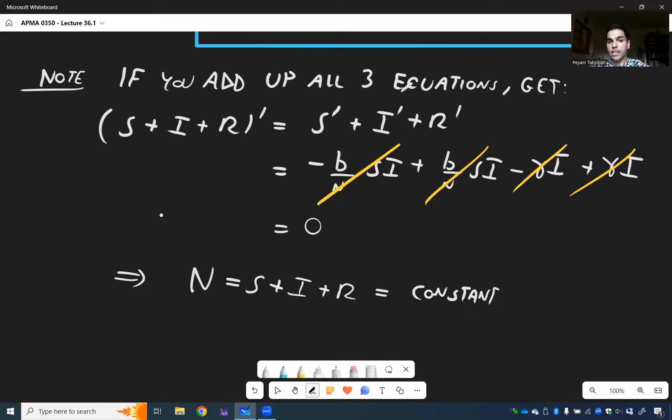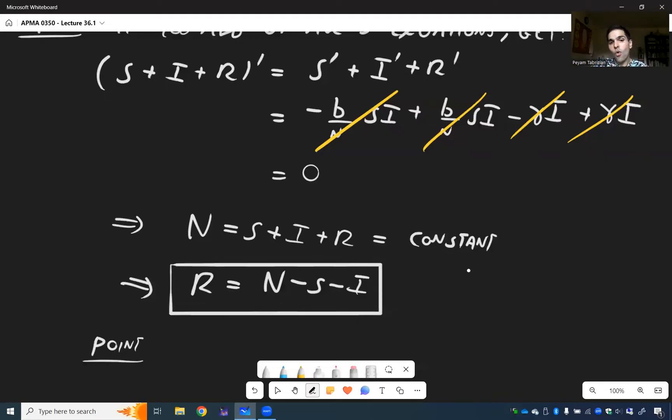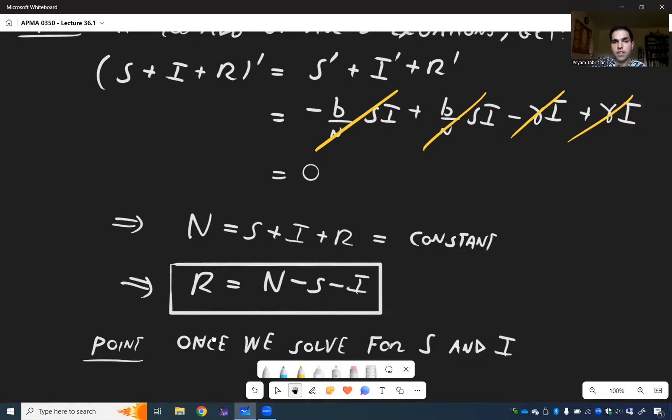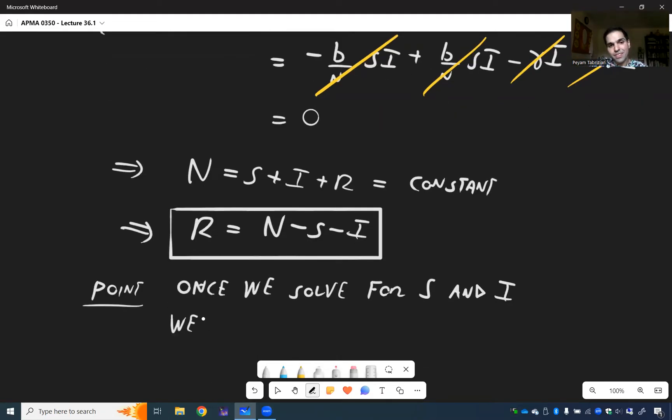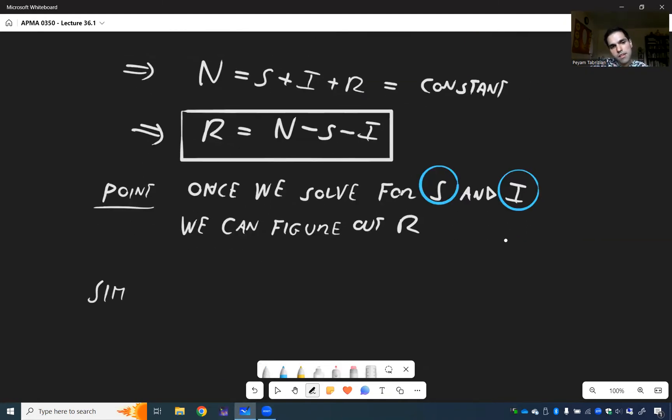But remember the sum, we call this the total population. N equals S plus I plus R is constant. And therefore, we can actually solve for R in terms of S and I. So N minus S minus I. So what's the point? The point is, once we solve for S and I, we can figure out R. So R was the sus one.